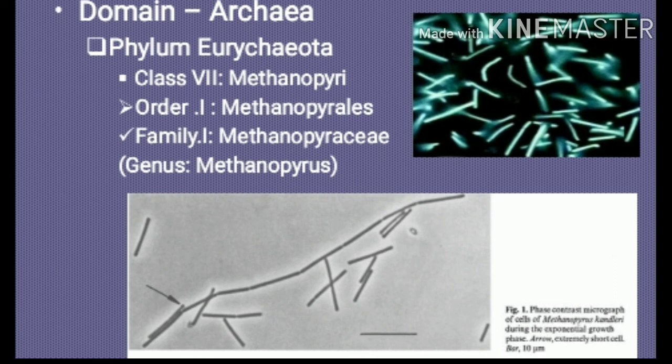Phylum Euryarchaeota is physiologically divided into 5 major groups: the Methanogenic Archaea, Extremely Halophilic Archaea, Archaea lacking a cell wall, Sulfate-reducing Archaea, and Extremely Thermophilic Sulfur metabolizers. Thank you for listening to the lecture on the first part of Bergey's Manual of Systematic Bacteriology, 2nd edition.